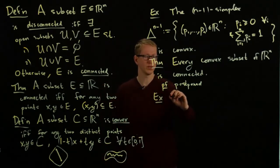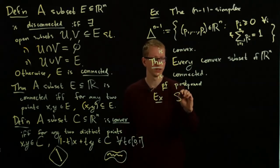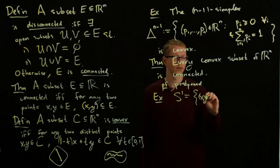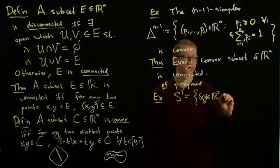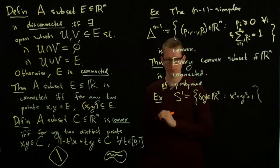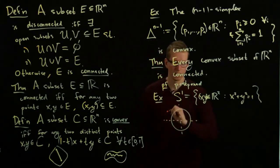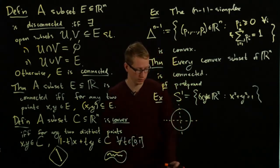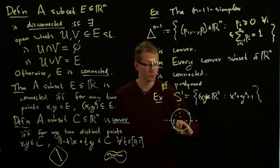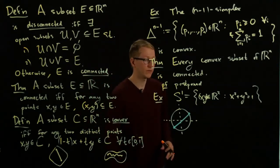An example that invalidates the converse statement is the unit circle. S^1, which is the set of all points (x,y) in R^2 such that x^2 + y^2 = 1. This just looks like the unit circle. It's not convex because if I take any two points and draw the straight line between them, that line doesn't lie on the unit circle at all.